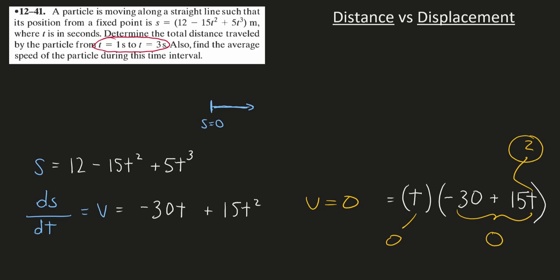What we really want to do is calculate our change in position from time equals one to our turning point, which is time equals two, and add to that our second displacement from our turning point to time equals three. I always like visualizing the problem. We know that time equals zero, v equals zero. We know that time equals two, v is zero. What's going on here?